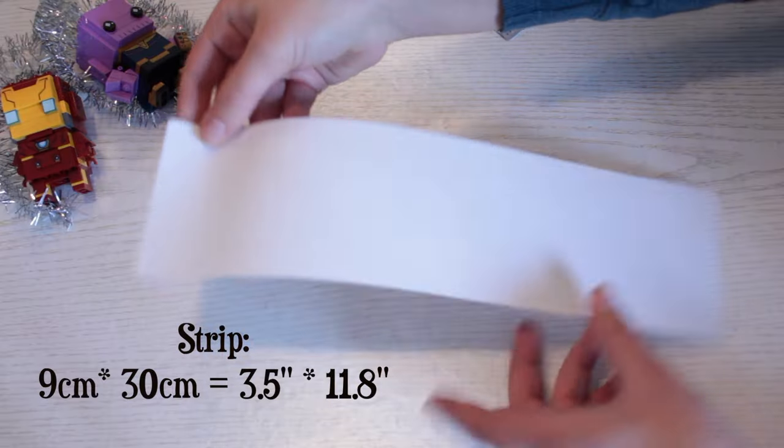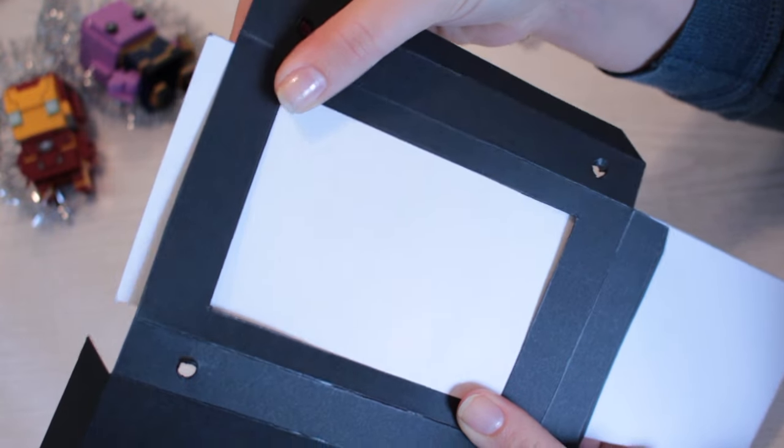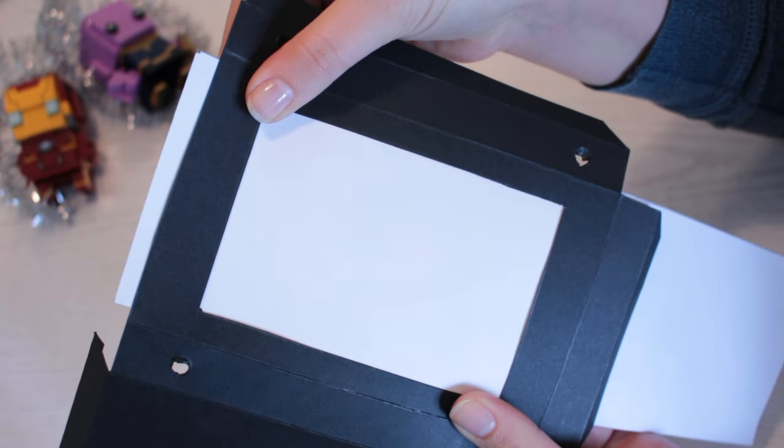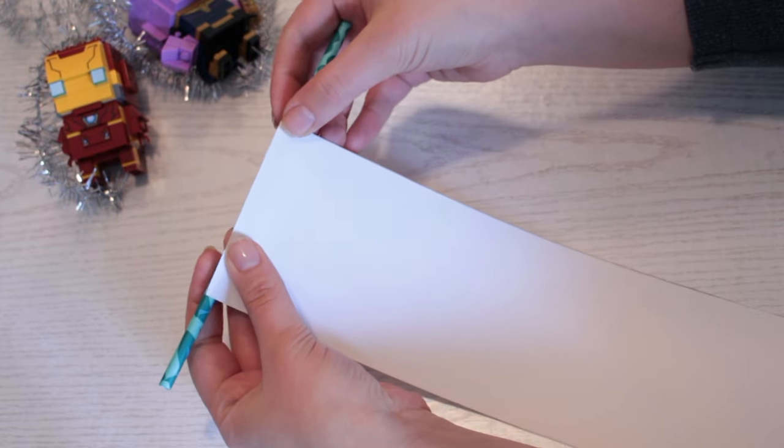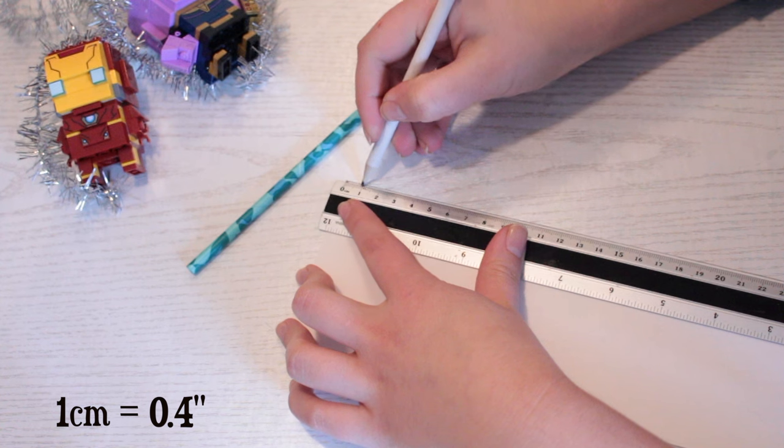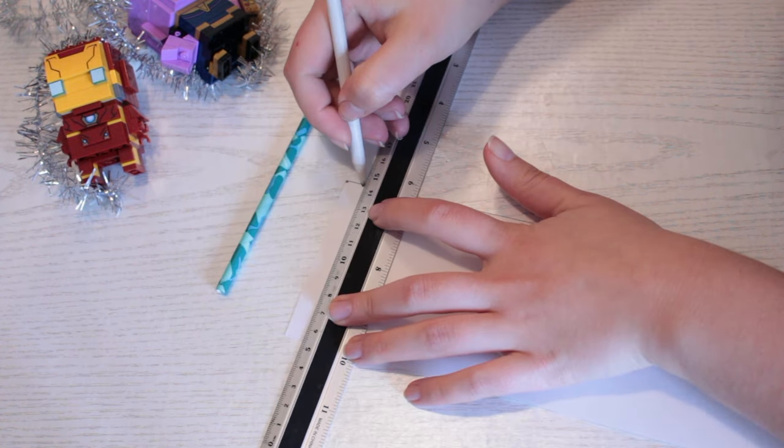The measurements for this paper strip is right on the screen. As you can see it fits right in the card. We need to make a little flap for the straw in each end, so measure 1 cm inwards on each end and make a line.